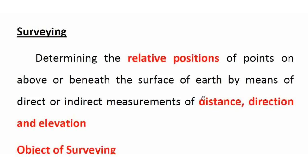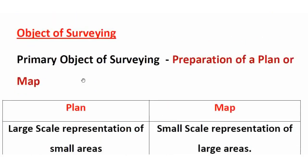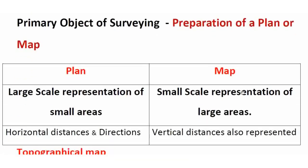Leveling is determining or representing the elevation or height. Height is determined — that is the level. Surveying means in terms of distance, direction, and elevation we calculate the elevation of the level. Next, the object of surveying: the main objective is the preparation of a map or plan. This is the primary objective of surveying. We measure in the field; details are calculated, then we plot the map.